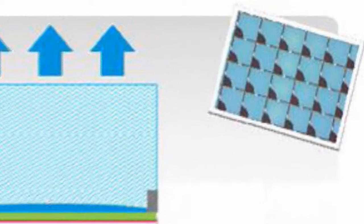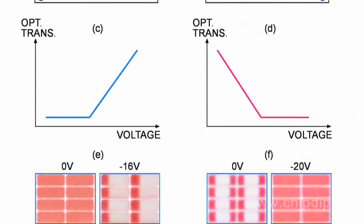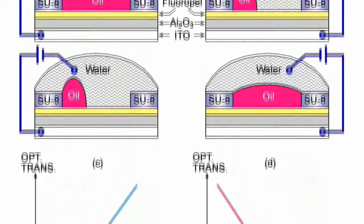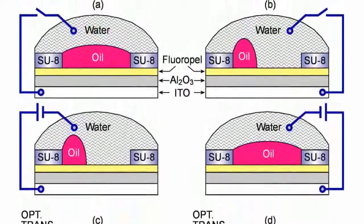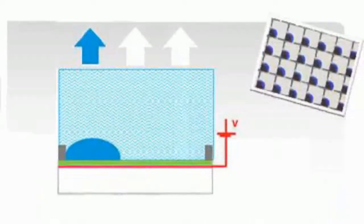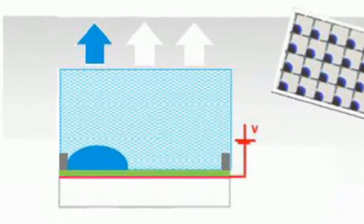In the absence of voltage the oil film covers the entire area of the cell, which corresponds to the mode off. At the same time the major part of the light flux is retained by the coloring agent or the oil film and it does not reach the observer's eye, which is perceived as a dark pixel.